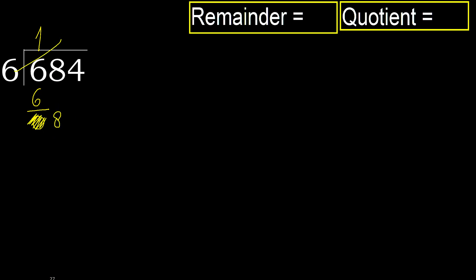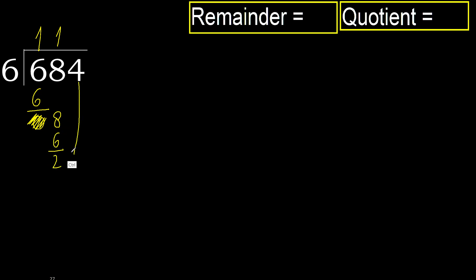6 multiplied by 2 is 12 — it's greater. Multiply by 1: 6. It's not greater. Subtract. Next.